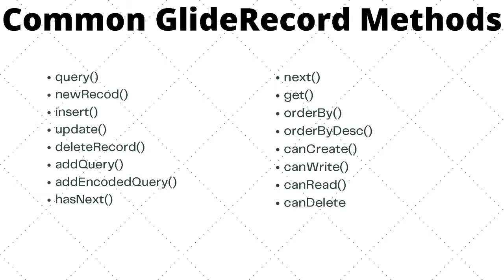Next is the newRecord method, which is used when inserting a new record into a table with GlideRecord. This method creates a new record, sets the default values for the record, and generates the sys_id for that record. We then have the insert method, which is used to insert the record after setting field values. We have an update method, which is similar to insert but instead updates an existing record with the field values that we set.